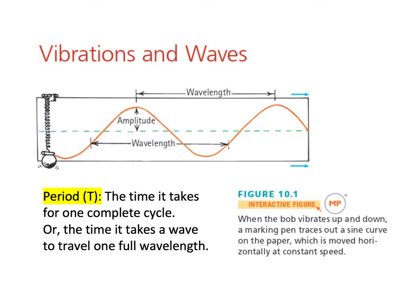The next thing we want to talk about is the period of the wave, usually represented by a capital T. The period is the time it takes for one complete cycle — the time it takes for the mass to go all the way up to the top and then come all the way back down to the bottom. One wavelength occurs in one period. So the alternate way to define the period is the time it takes the wave to travel one full wavelength.